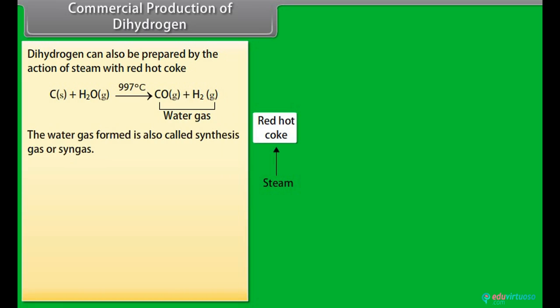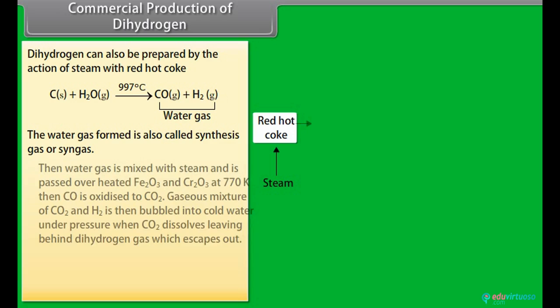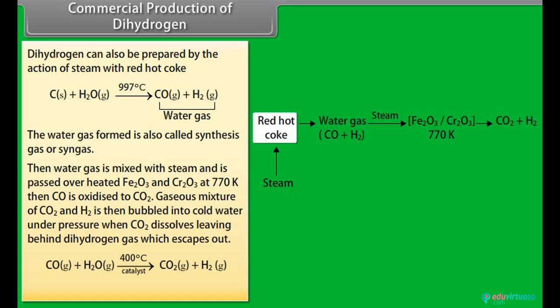Commercial production of dihydrogen: Dihydrogen can be prepared by the action of steam with red hot coke. The water gas formed is also called synthesis gas or syngas. Then water gas is mixed with steam and is passed over heated Fe2O3 and Cr2O3 at 770 Kelvin. Then CO is oxidized to CO2. Gaseous mixture of CO2 and H2 is then bubbled into cold water under pressure when CO2 dissolves leaving behind dihydrogen gas which escapes out. This reaction is called water gas shift reaction.